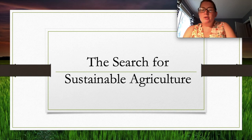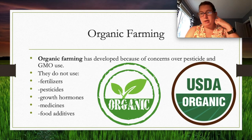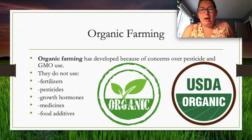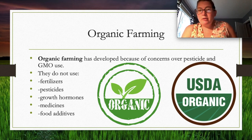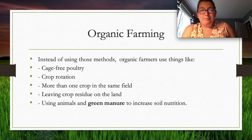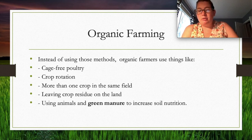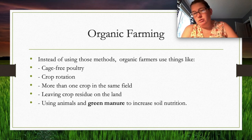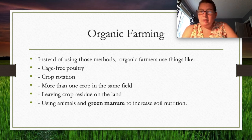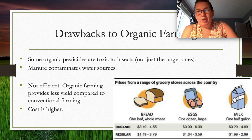Organic farming developed in response to concerns over GMOs and pesticides. Organic farmers do not use fertilizers, pesticides, growth hormones, medicines, or food additives — it's all-natural food. Organic methods include cage-free poultry, crop rotation, growing more than one crop in the same field, leaving crop residue on the land, and using animals and green manure to increase soil nutrition.